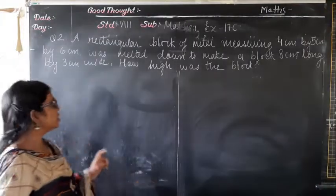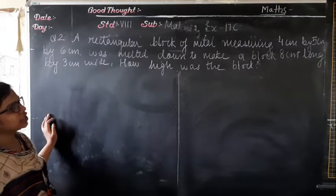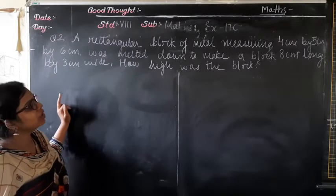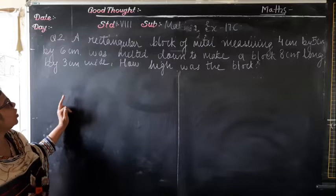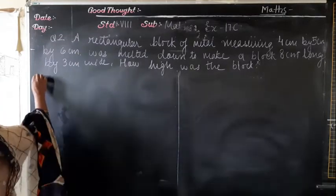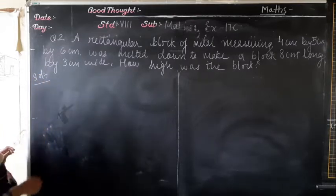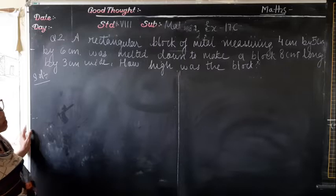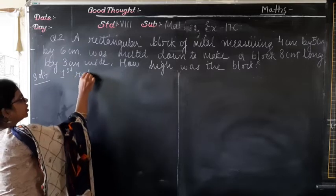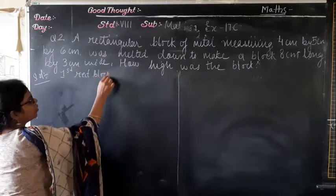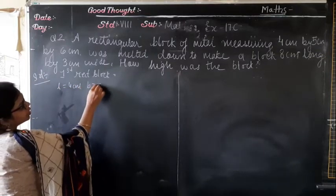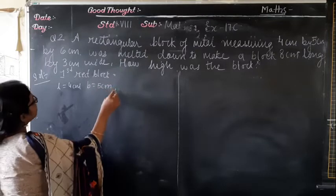This is question number 2. A rectangular block of metal measuring 4 cm by 5 cm by 6 cm was melted down to make a block 8 cm long by 3 cm wide. How long was the block? Let the first rectangular block have length = 4 cm, breadth = 5 cm.